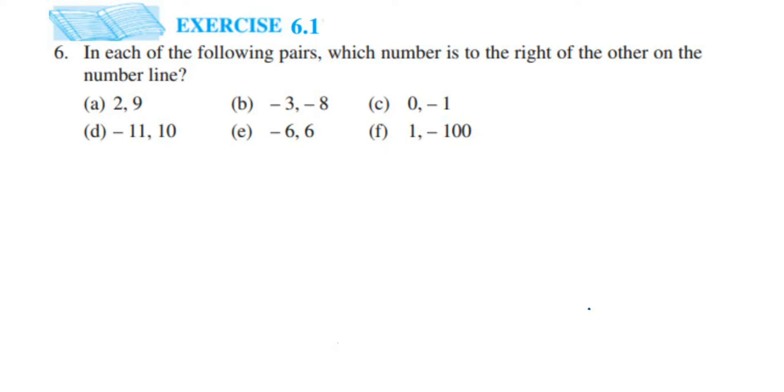Hey everyone, so here I am doing a question from the integer chapter of class 6. This is 6.1 exercise, 6th question. The question is: in each of the following pairs, which number is to the right of the other on the number line?